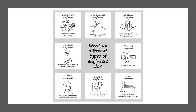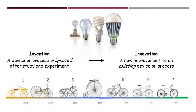Engineers do this with all sorts of information and in all sorts of fields. There are engineers for just about everything — from the roads we drive on to the iPhones we use. All sorts of things have engineers working to use scientific principles to create better lives for everybody. A big part of what we're looking at today is something called an engineering design loop.